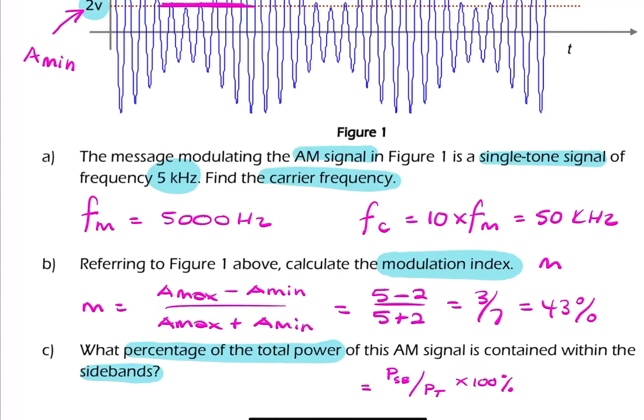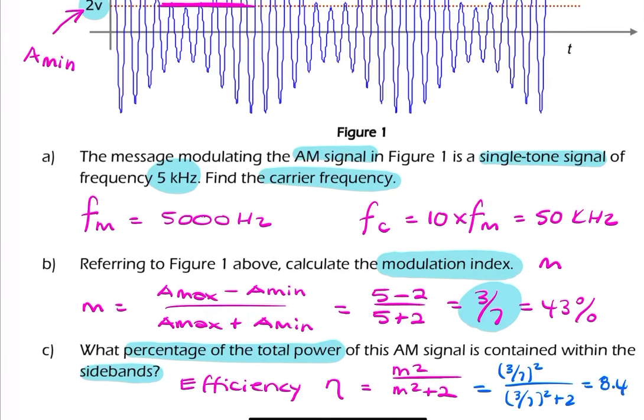That's the question. And that is the definition of the efficiency. So the question is actually asking for the efficiency. Because, what percentage of the total power is contained within the sidebands? That's the definition of efficiency. And we have an expression for that. So efficiency is simply m squared over m squared plus 2, where m is our modulation index. It's what we just calculated. So you can do the maths. It's 3 over 7 squared over 3 over 7 squared plus 2. And that gives you 8.4%. Remember, they're asking for a percentage, so you need to multiply by 100.